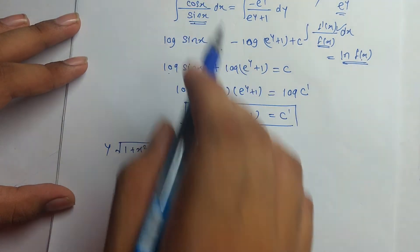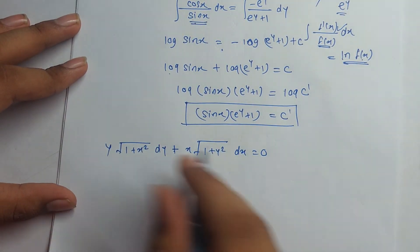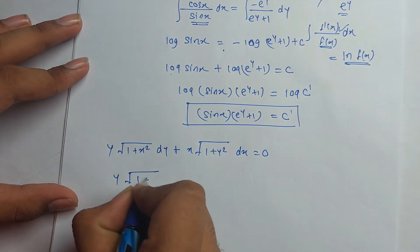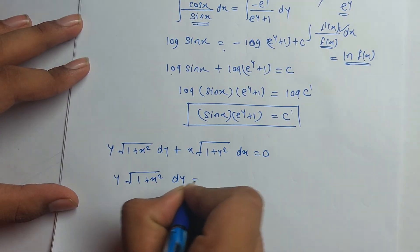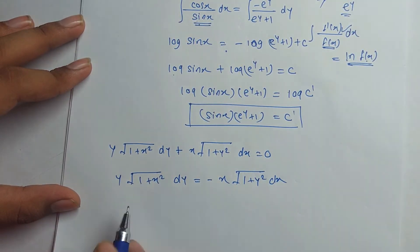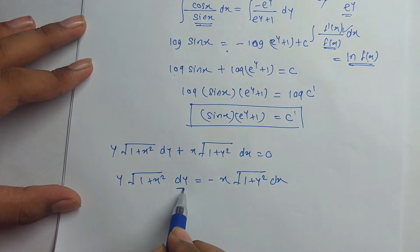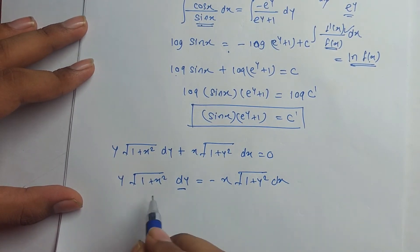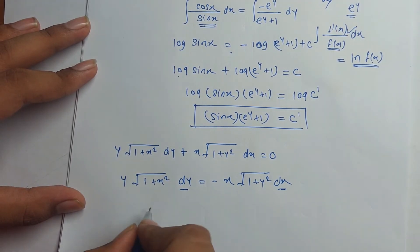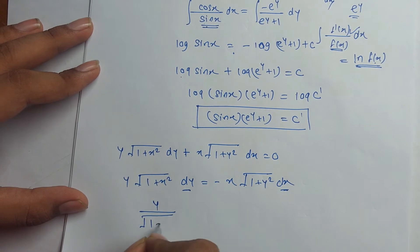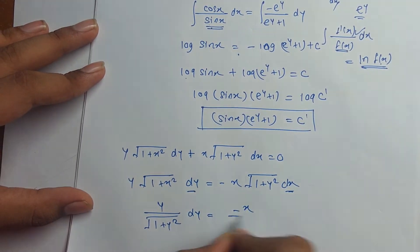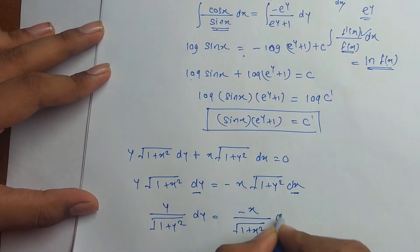To solve this using the variable separable form, we move the dx term to the right-hand side: √(1 + x²)dy = −x√(1 + y²)dx. Then moving the y term to the left and the x term to the right, the equation becomes: y/√(1 + y²) dy = −x/√(1 + x²) dx.